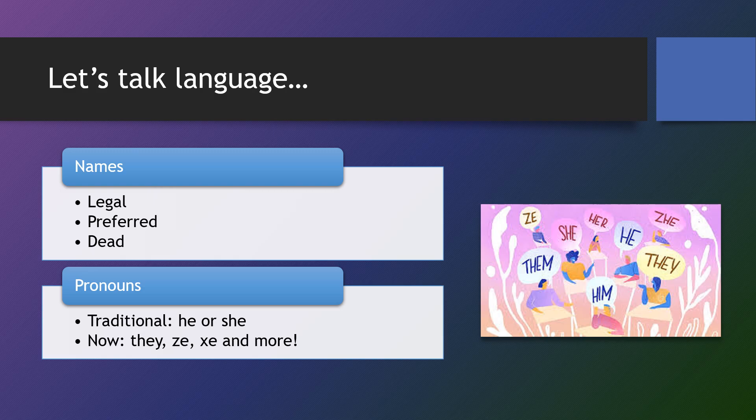That also brings us to pronouns. We have our traditional pronouns of he or she, but there are many more — they, zay, zee, and more. You really want to just ask someone what their preferred name is and what pronouns they prefer to use.